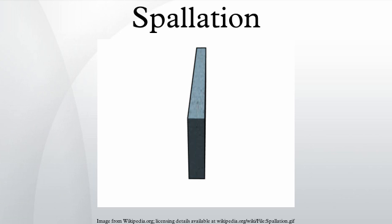Whereas Nimrod would produce around 2 microamperes at 7 GeV, ISIS produces 200 microamperes at 0.8 GeV. This is pulsed at the rate of 50 Hz, and this intense beam of protons is focused onto a target.